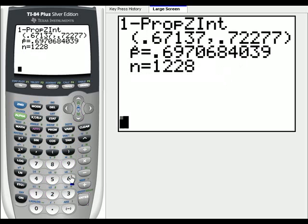And so, our proportion, our confidence interval for the 95% confidence would be an interval from 0.671 up to 0.723.